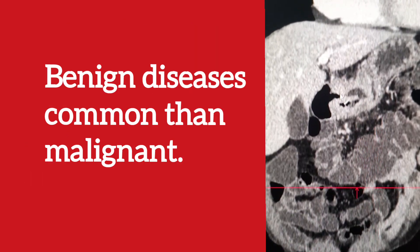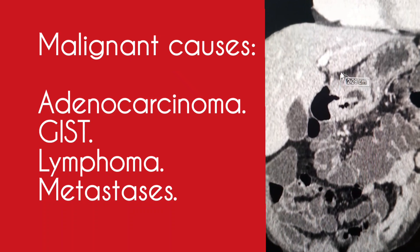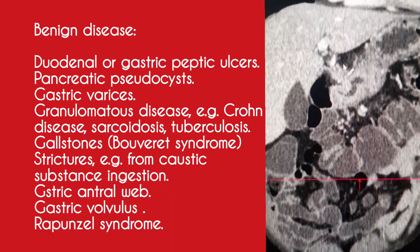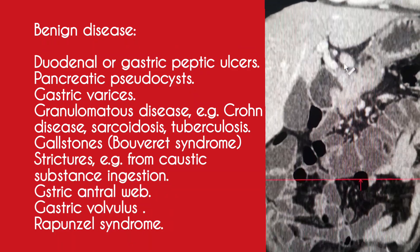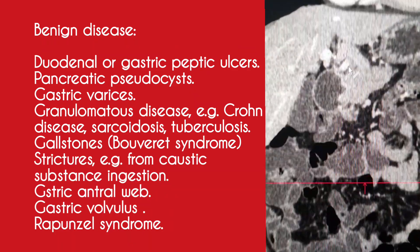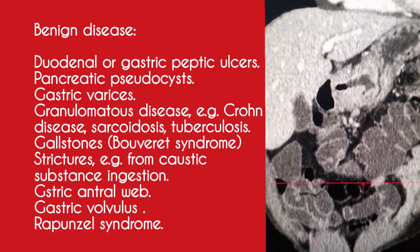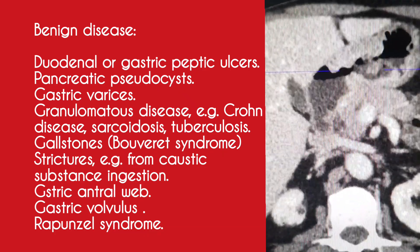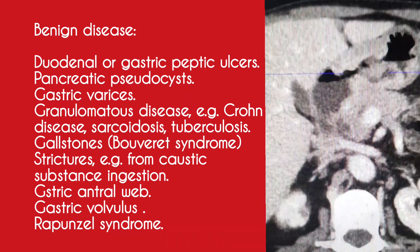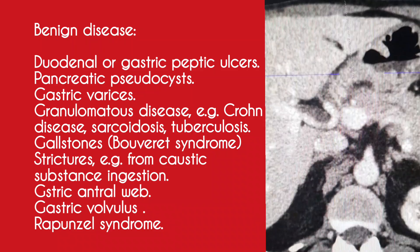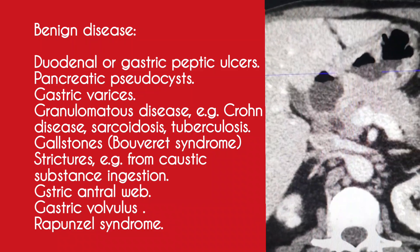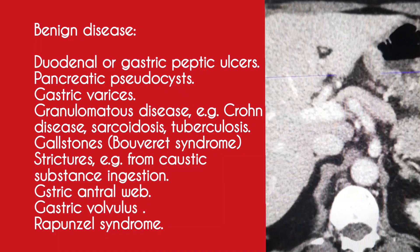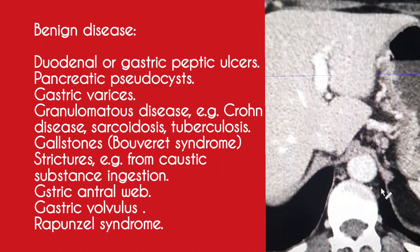Malignant causes include adenocarcinoma, lymphoma, and metastases. Benign causes include duodenal or gastric peptic ulcers, pancreatic pseudocysts, gastric varices, granulomatous diseases such as Crohn's disease, sarcoidosis, and tuberculosis, as well as gallstones, Bouveret syndrome, and strictures from caustic substance ingestion.